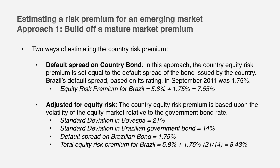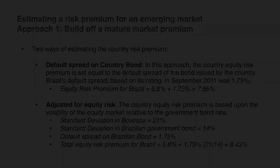The Brazilian equity index is about one and a half times more volatile than a Brazilian bond — that's 21 divided by 14. If I scale up the default spread of 1.75% for that additional risk, I come up with about 2.63%. I add that 2.63% to my base premium for the U.S. — let's assume 5.8% based on my implied premium — and I have an equity risk premium for Brazil. To recap: start with a mature market premium, look up the default spread for the country, scale that spread up if you can, and add it on to the mature market premium.